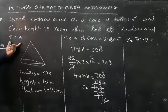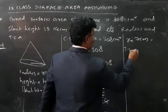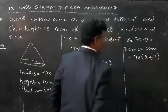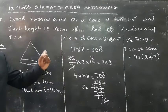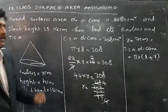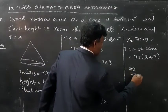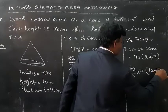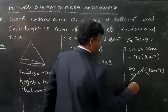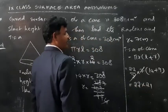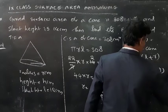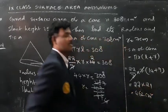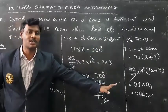Next, we need the total surface area. The formula for total surface area of a cone is πR(L + R). π is 22/7, radius is 7 cm, and slant height is 14 cm. So: (22/7) × 7 × (14 + 7). The 7s cancel, giving 22 × 21 = 462. So the total surface area of the cone is 462 cm².